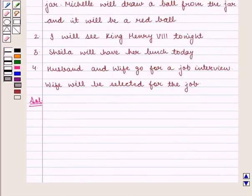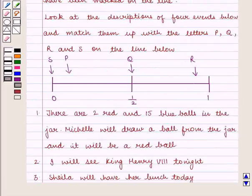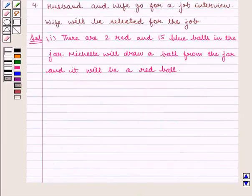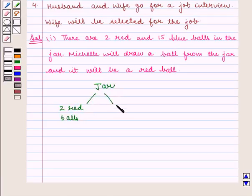Let us proceed to the solution. In this question we have to match the events on the probability line. The first part of the question is there are 2 red and 15 blue balls in the jar. Michelle will draw a ball from the jar and it will be a red ball. Now we know that in the jar there are only 2 red balls and 15 are blue balls.